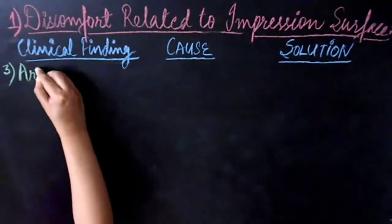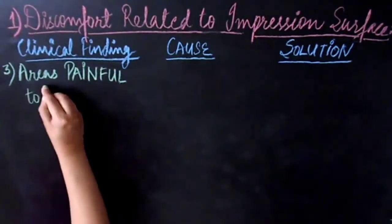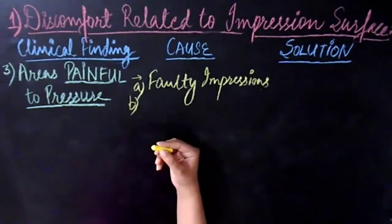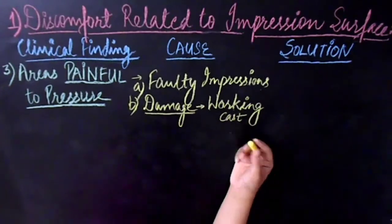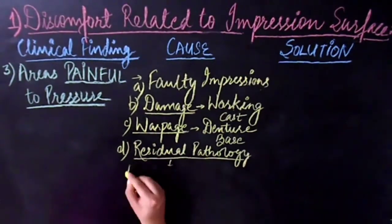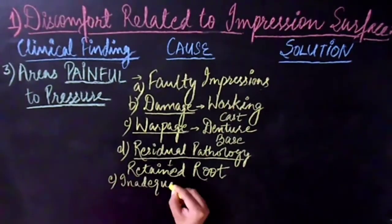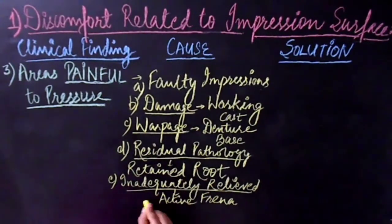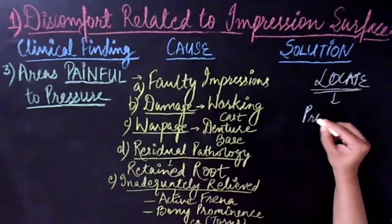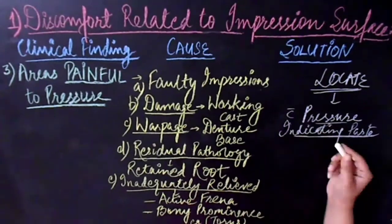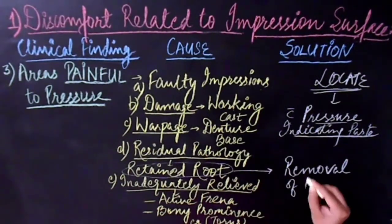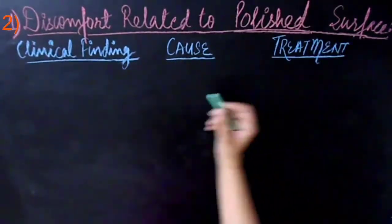Sometimes complete denture patients report certain areas in the mouth that are painful to pressure. Such pressure areas may be due to various reasons like faulty impressions, damage to the working cast, warpage of the denture base, residual pathology such as a retained root, inadequate relief given to active frena, or inadequately relieved bony prominences such as a torus. In such cases, use a pressure indicating paste to locate the area to be relieved. If the discrepancy is severe, it is advisable to remake the denture. If a retained root is present, its removal is indicated.